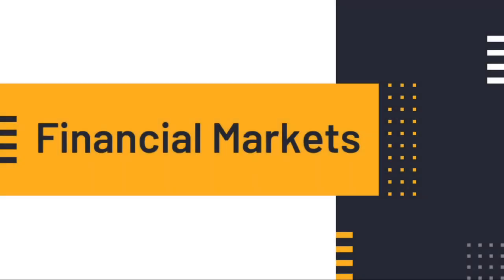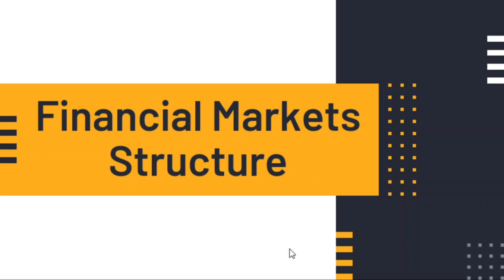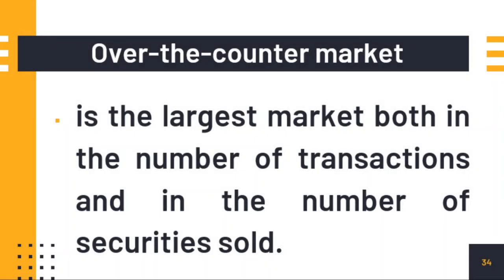Now let's proceed with financial markets — these are where financial securities are bought and sold. They include organized exchanges for stocks and futures, the over-the-counter market for bonds, foreign exchange, and dealer markets. The over-the-counter (OTC) market is the largest market both in number of transactions and in number of securities sold. Virtually all securities and assets can be sold in the OTC market. Some assets such as currencies can only be traded in OTC markets. Most traders in these markets are large institutional traders such as banks, funds, pension funds, securities dealers, and wealthy individuals.